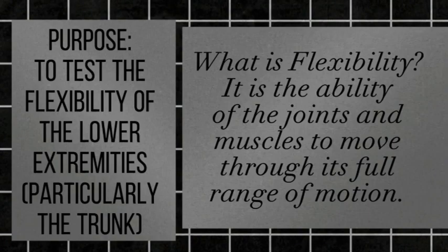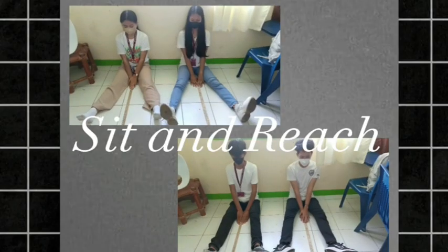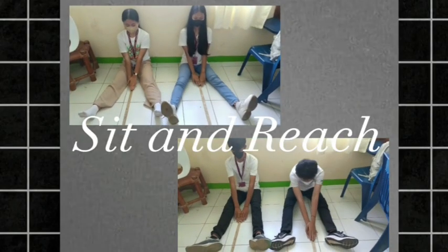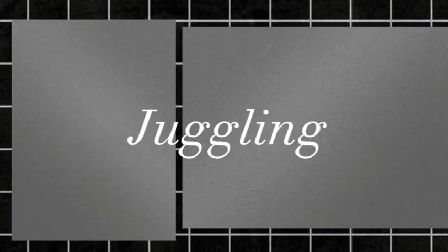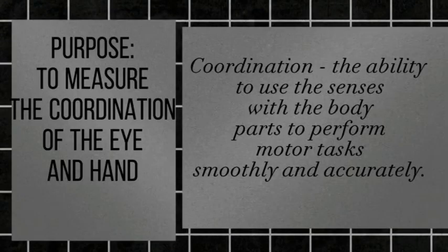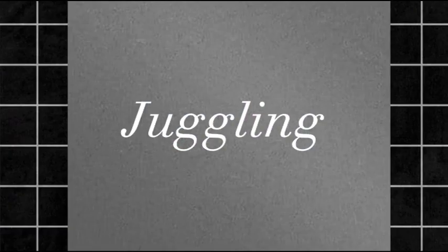Sit and reach. Purpose: to test the flexibility of the lower extremities, particularly the trunk. Juggling. Purpose: to measure eye-hand coordination. Coordination is the ability to use the senses together with the body parts to perform motor tasks smoothly and accurately.